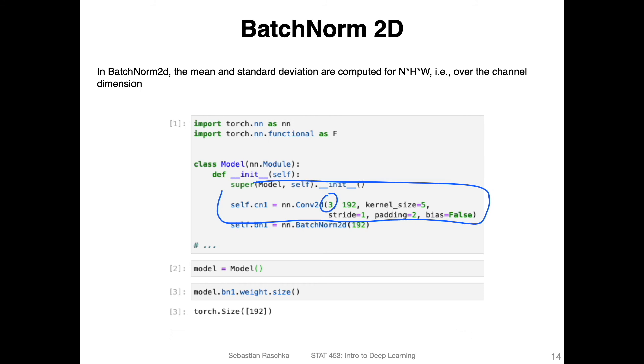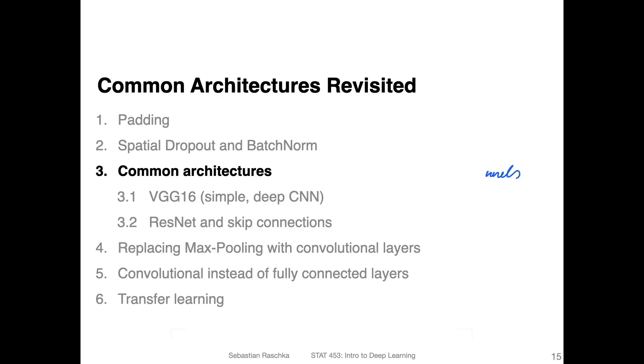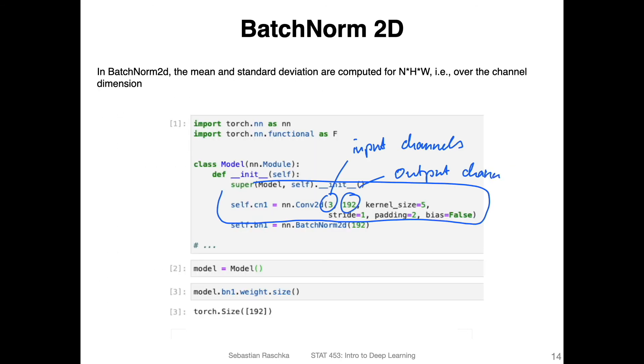So if this is my convolutional layer here, I just define the number of input channels and the number of output channels, and then I apply batch norm to that. Here, the number of parameters, the number of betas and gammas of batch norm, is the number of output channels. So we have to put 192 here, because I have 192 output channels, so we'll have 192 betas and 192 gammas.